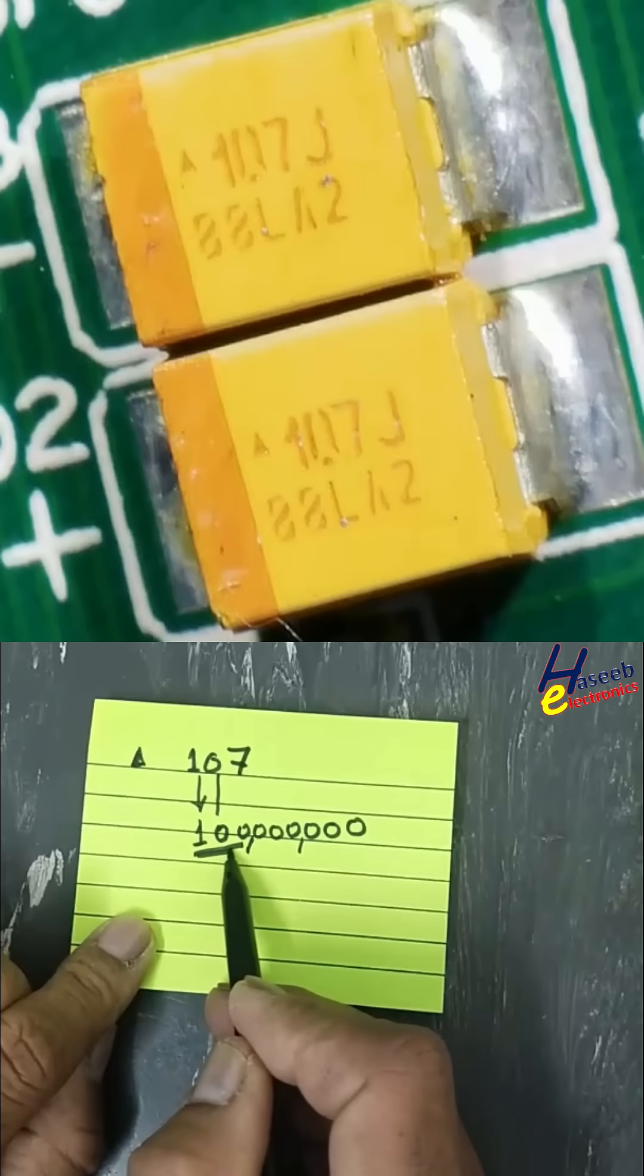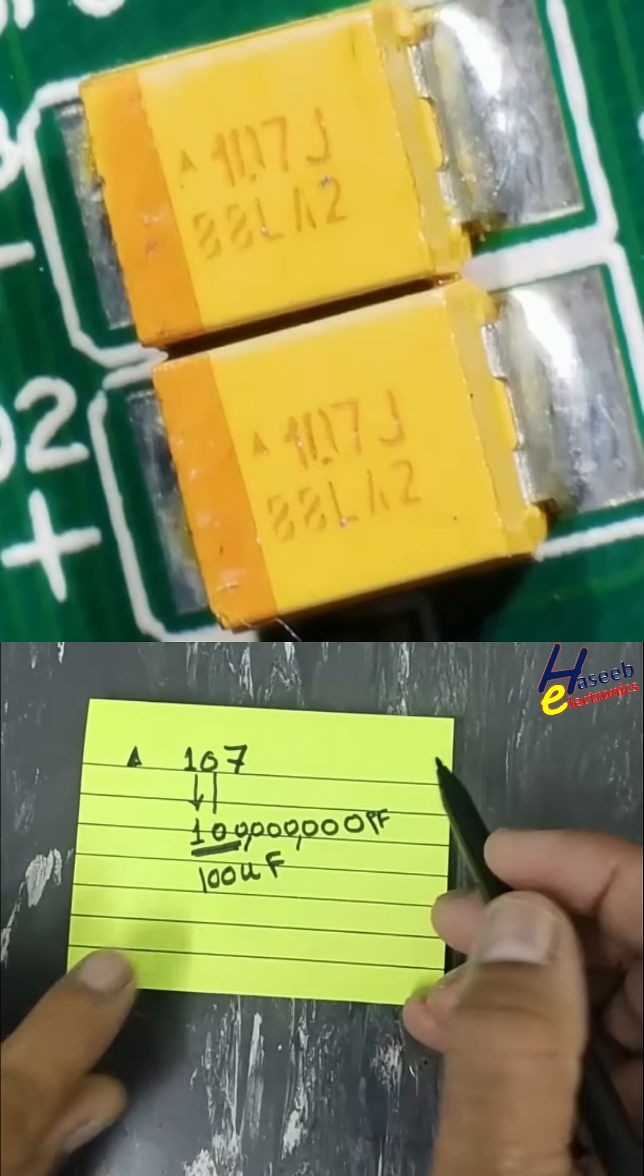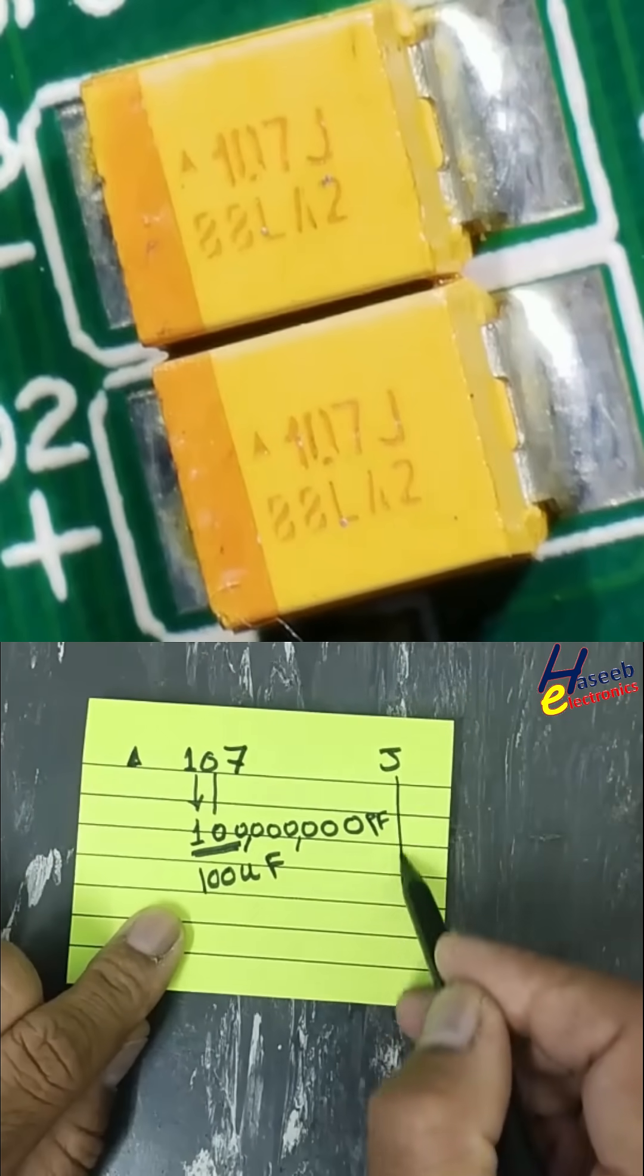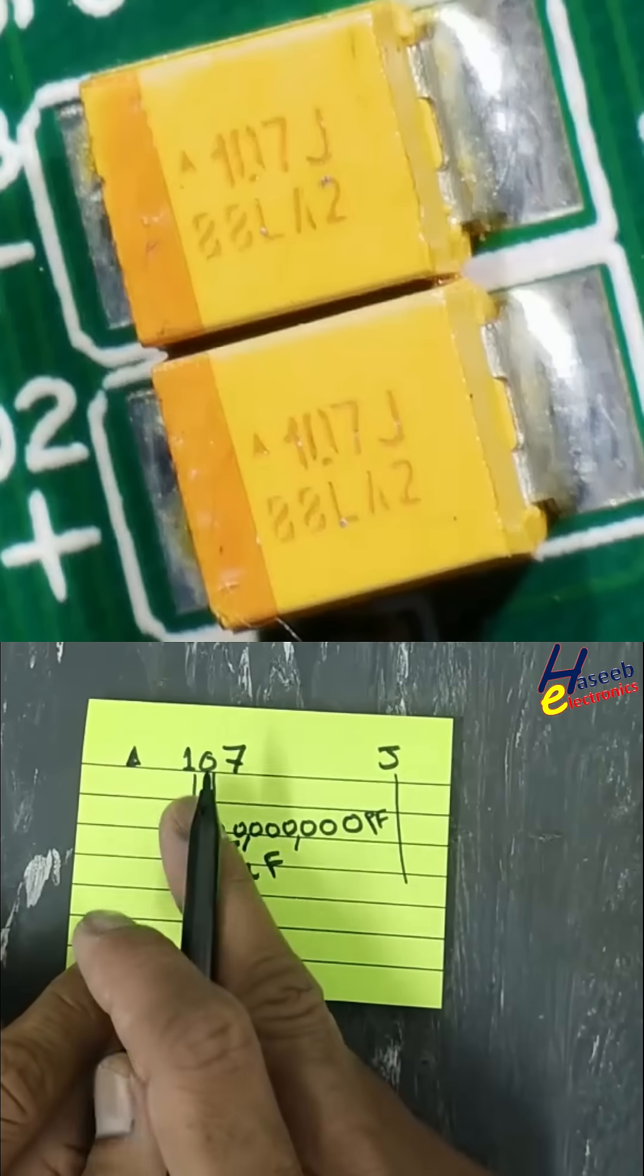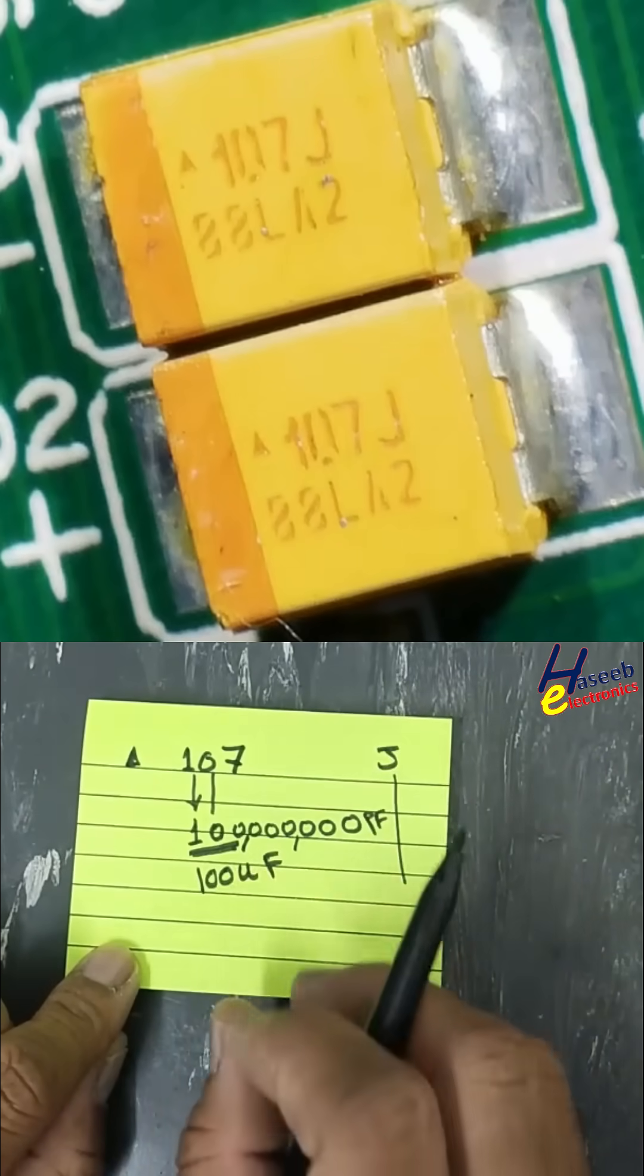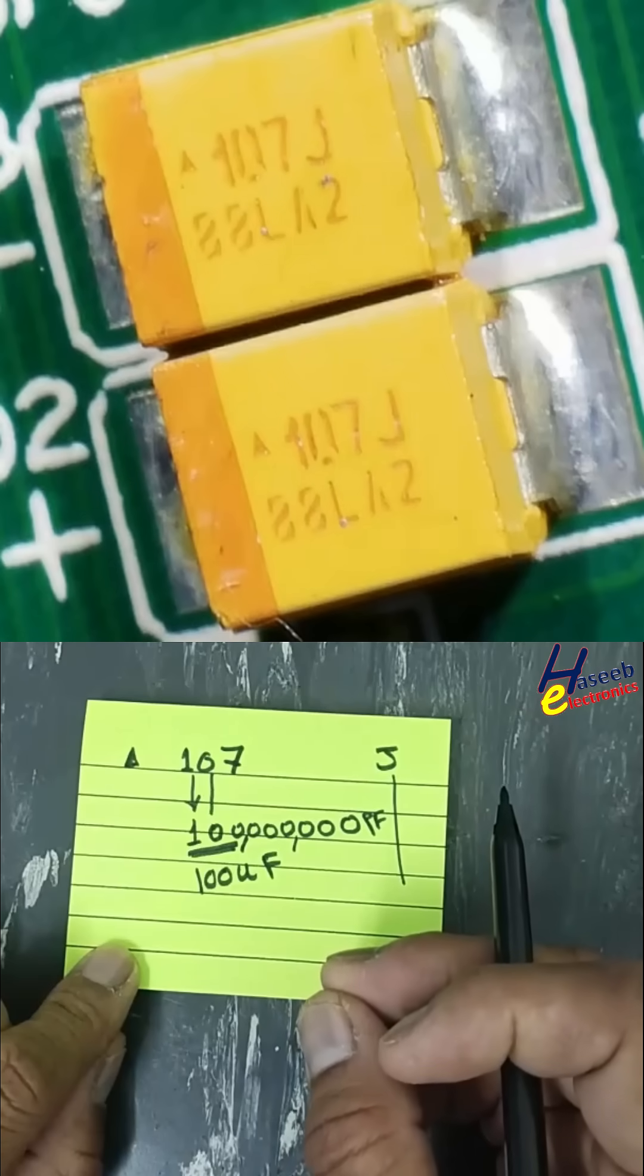The next digit J - normally when we see J in ceramic capacitors, that is capacitance tolerance, but this J is 6.3 volt. This is a voltage code.